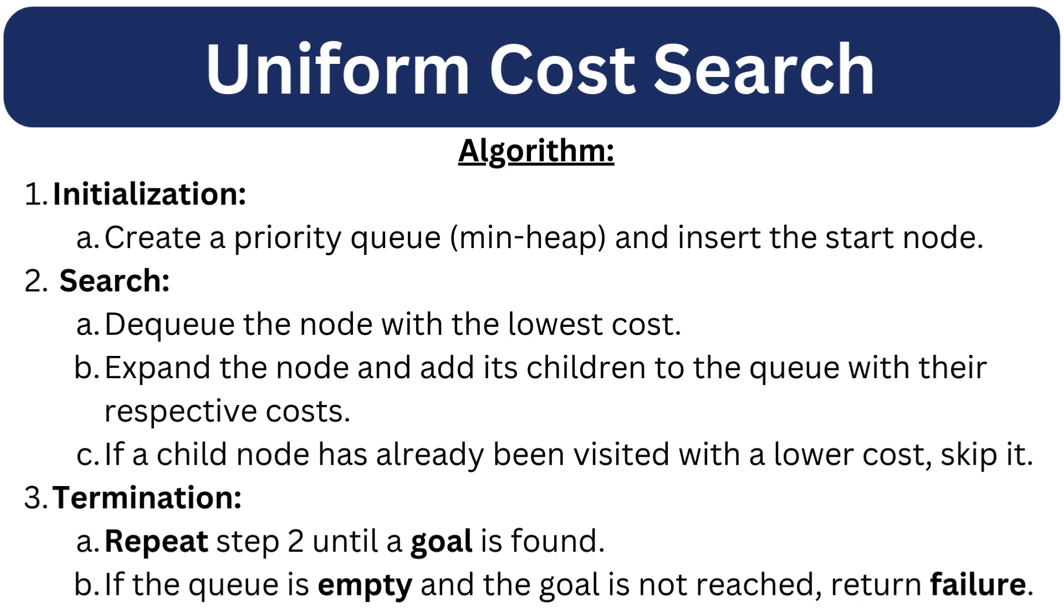Step 3 Termination Condition, there are two termination conditions. First one, we will repeat step number 2 until a goal is found. And a second condition is if the queue is empty and the goal is not found, algorithm will return a failure.